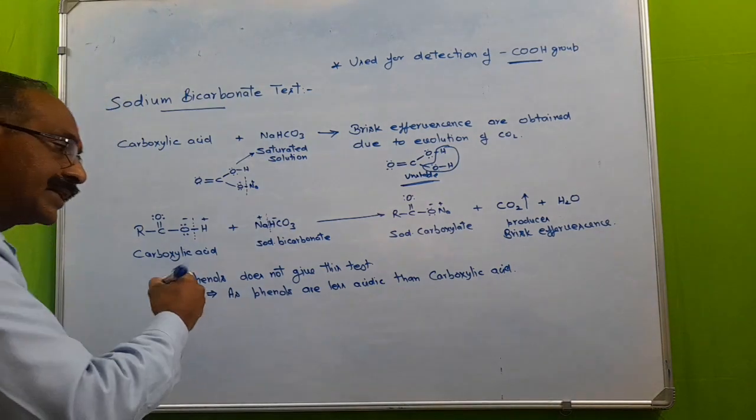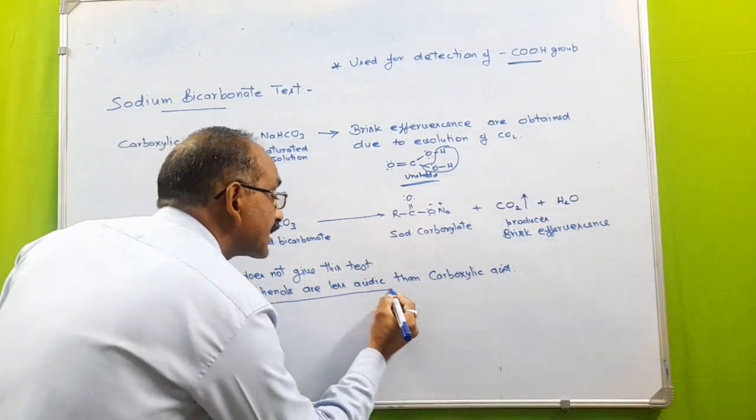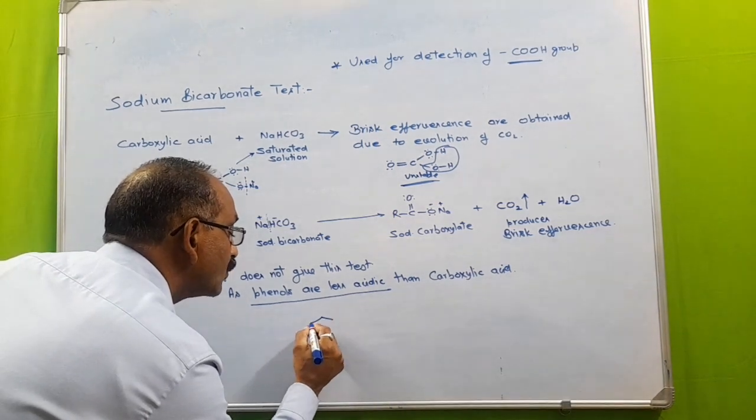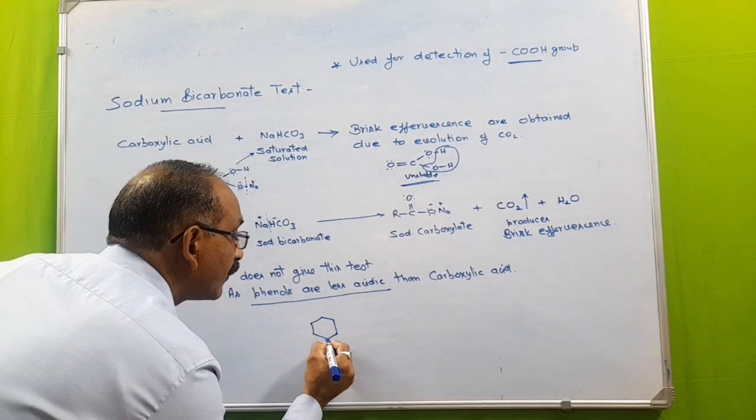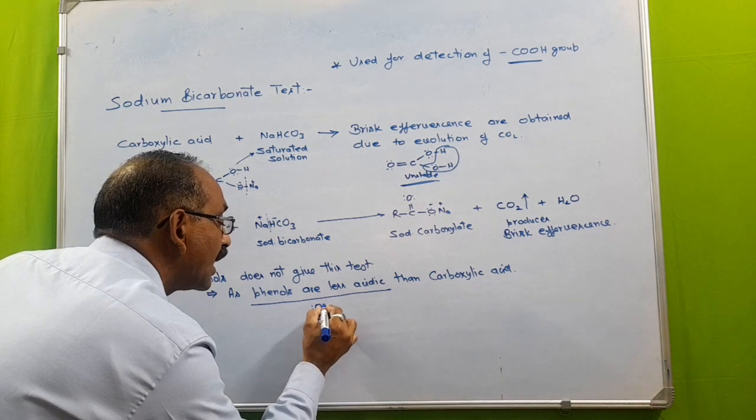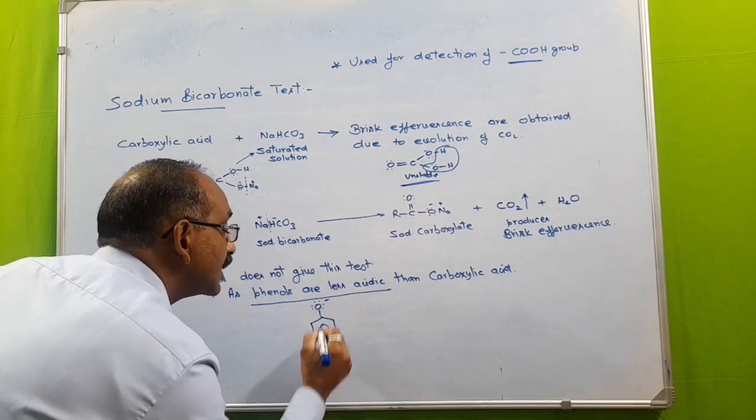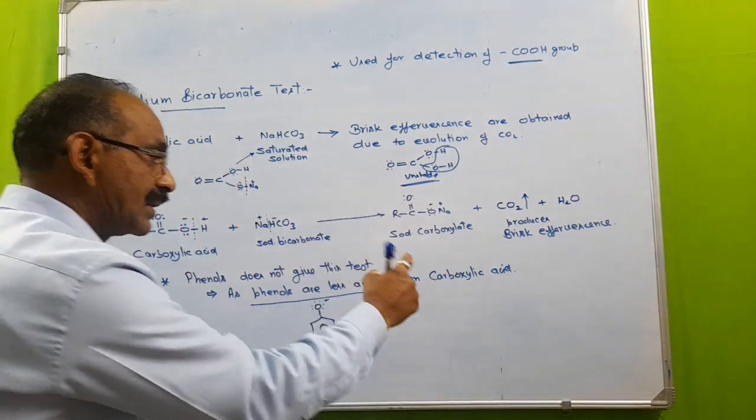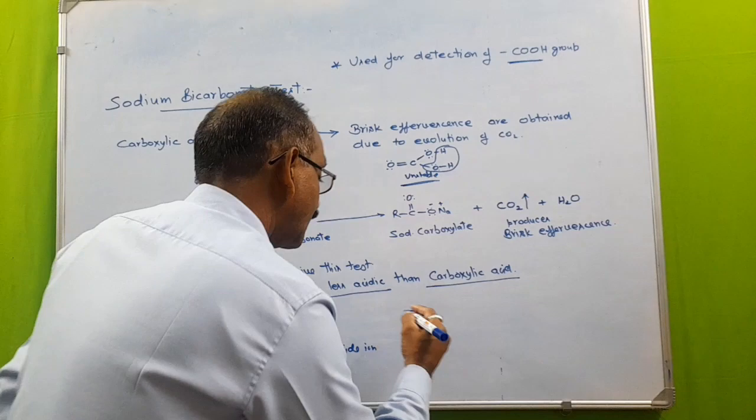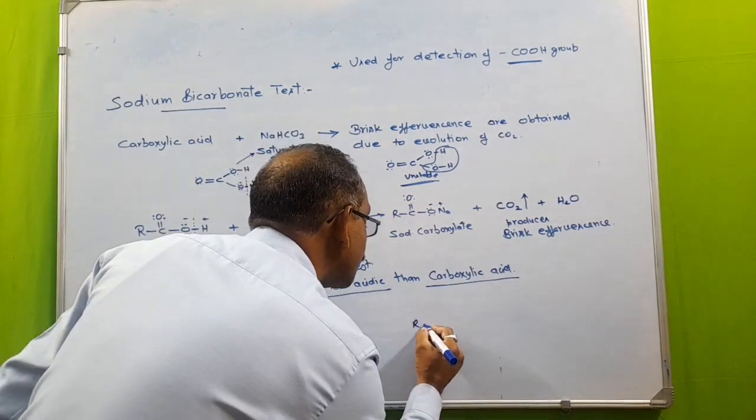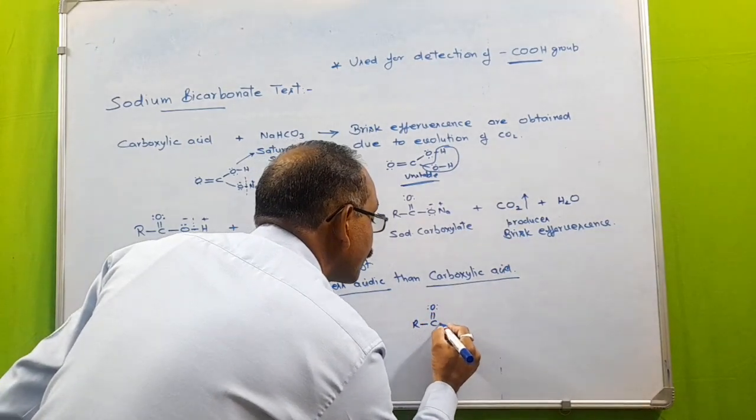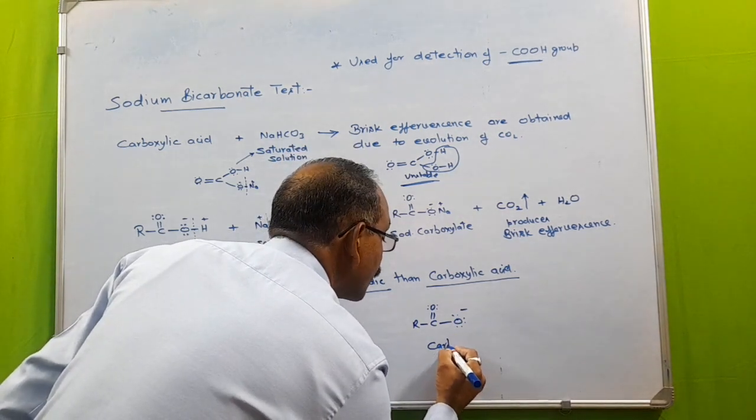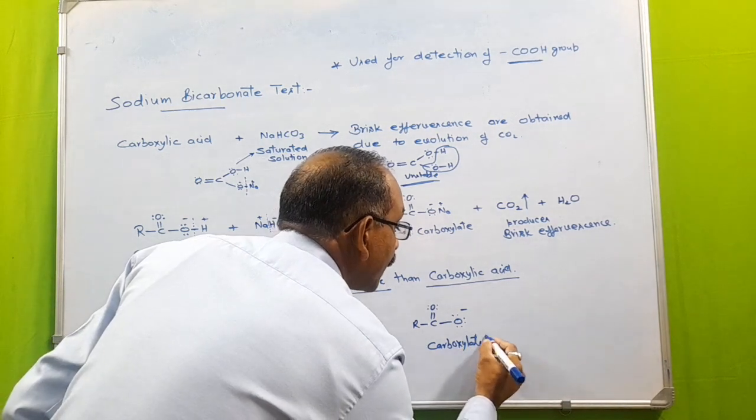See now question arises, why are phenols less acidic? Phenols, on dissociation or after furnishing the H+ ion, produce phenoxide ion, while the carboxylic acid, after furnishing the proton, produces carboxylate ion.